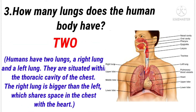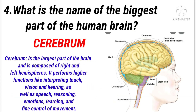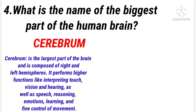How many lungs does the human body have? Answer: 2. What is the name of the biggest part of the human brain? Answer: Cerebrum.